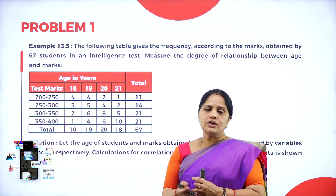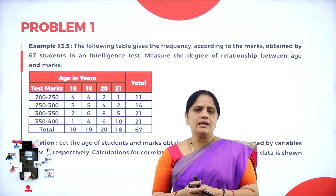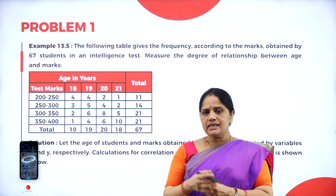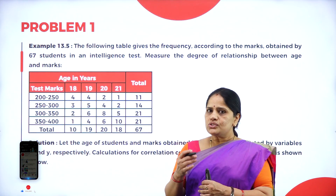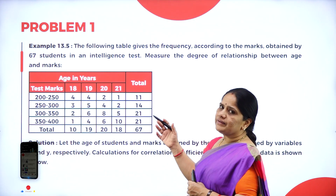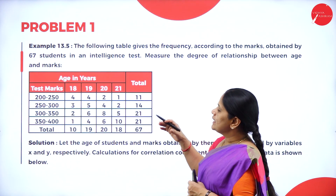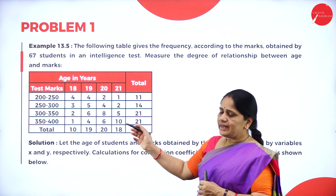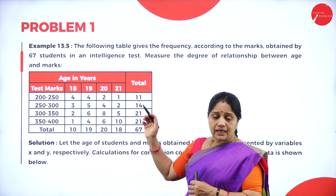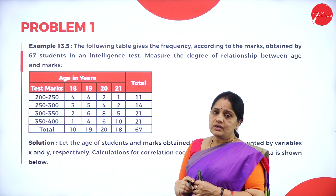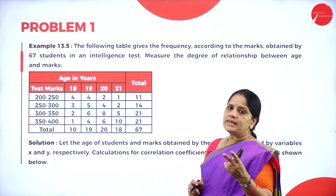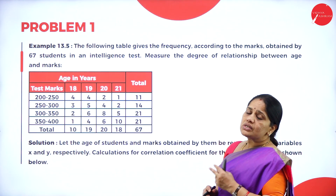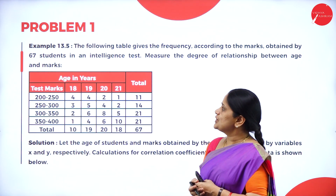Up till now we have worked out problems on Karl Pearson's correlation where the data is given directly. Here we will be working out correlation problems where class intervals are given — two types of class intervals. So how do you find the correlation?